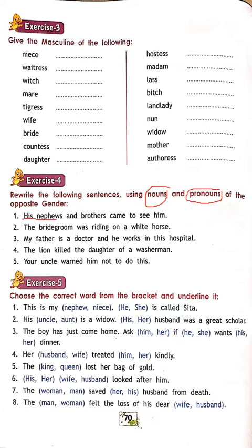In exercise 4, you have to change the male nouns to female or female nouns to male. For example, change bridegroom to bride, uncle to aunt, and so on. Doctor is a common noun so we can't change it. Write all the questions first, then write the answers. If male is there, change to female; if female is there, change to male.